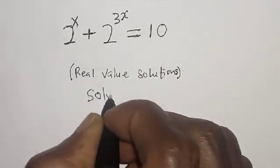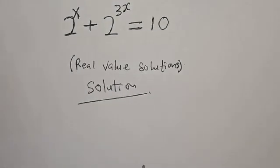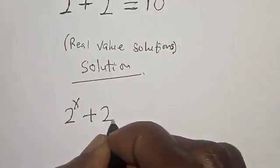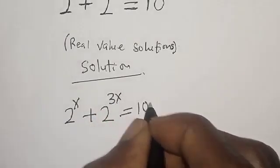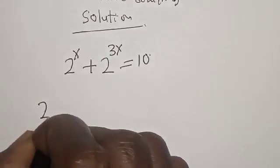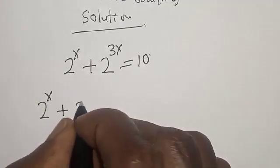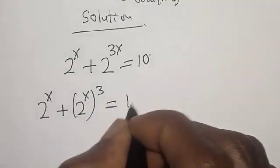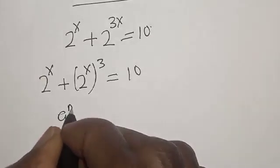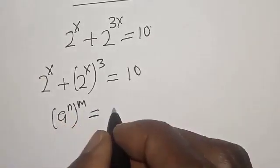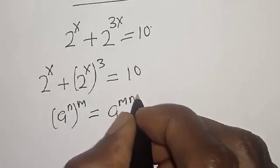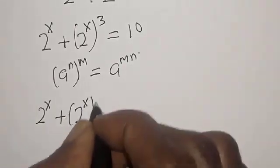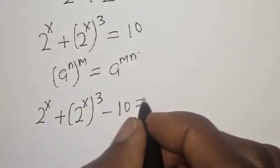Solution. 2 raised to power x plus 2 raised to power 3x is equal to 10. Now, 2 raised to power x plus 2 raised to power x, raised to power 3, is equal to 10. Using the rule that a raised to power n raised to power m is equal to a raised to power m times n, we rearrange to get 2 raised to power x plus 2 raised to power x cubed minus 10 is equal to 0.